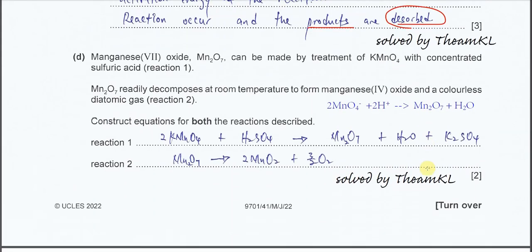Part D: Manganese(VII) oxide, Mn₂O₇, can be made by the treatment of KMnO₄ with concentrated sulfuric acid. And after that, the Mn₂O₇ will decompose and form manganese(IV) oxide and a colorless diatomic gas. So these are two different reactions. Now it's asking construct equations for both reactions. Reaction 1 is relatively difficult. What you need to do is balance the equation accordingly. Some of you might be confused what to put and which one to put.